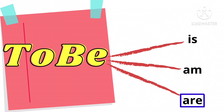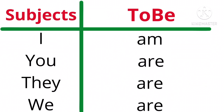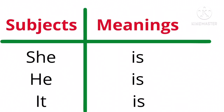Setiap to be mempunyai pasangan subjeknya masing-masing. Coba perhatikan: subject I dipasangkan dengan to be am; you are; they are; we are; she is; he is; it is.